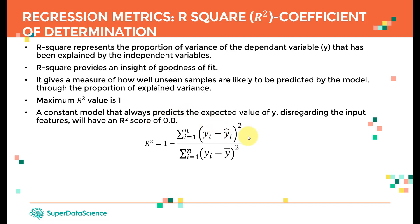How do we calculate R-square? R-square equals 1 minus the summation of (y-i minus y-hat) squared, divided by the summation of (y-i minus the mean) squared, summed over all data points. We won't calculate this manually — we're going to use scikit-learn in Python, which will calculate R-square for us.